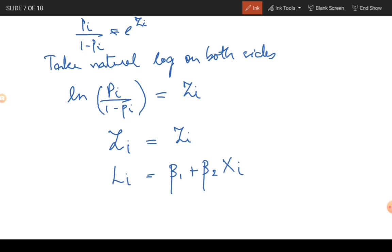Once I do the log transformation of the odds ratio, what happens is that my logit, this L_i is called the logit, and hence it's called the logit model. So my logit is linear in parameters as well as linear in variables. Now look at some of the properties of the logit.